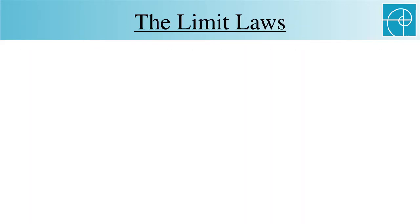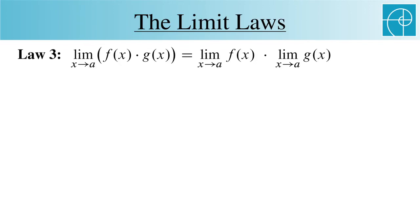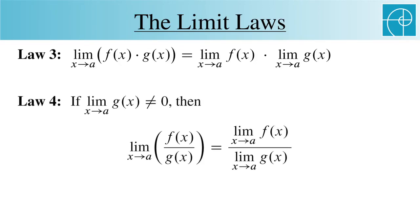There are two more limit laws for the remaining two operations. Law three says that the limit of a product is the product of the limits, and law four says that as long as the limit of g isn't 0, then the limit of a ratio is the ratio of the limits.